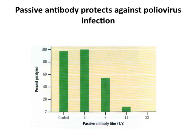A student asked: if polio only paralyzes as a mistake, why are so many control animals paralyzed? Polio only paralyzes one in a hundred people. But in mice, if you put enough virus intraperitoneally or intravenously, you can get them all paralyzed—we're obviously bypassing something that is present in humans.